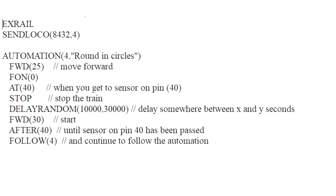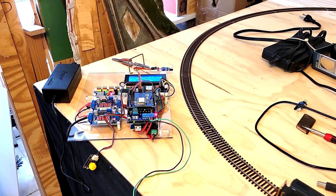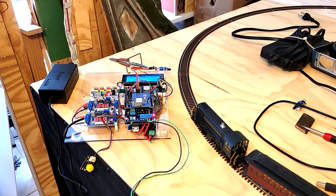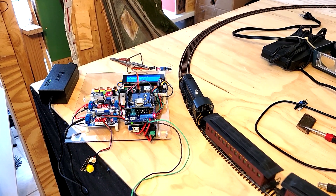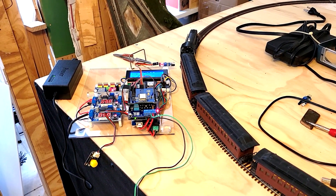The last command, FOLLOW 4, just goes back to the top and repeats the same thing over and over until you shut off the power. You'll notice in the video that there are no throttles involved - everything is automatic. You just turn the power on, it boots up, and this sequence starts. Simple as that.